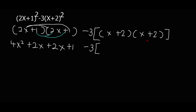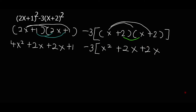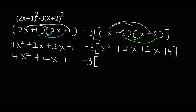Then 2x times 1 is 2x, and 1 times 2x is 2x, and 1 times 1 is 1. And also x times x is x squared, x times 2 is 2x, 2 times x is 2x, and 2 times 2 gives 4. On this side, add the like terms: 4x squared, 2x plus 2x gives 4x.